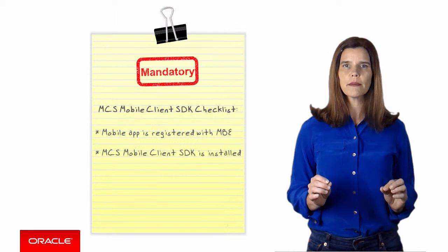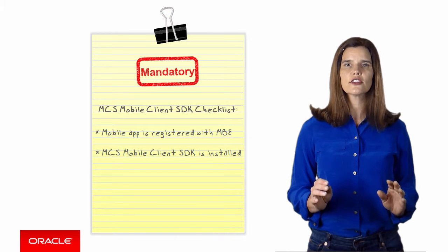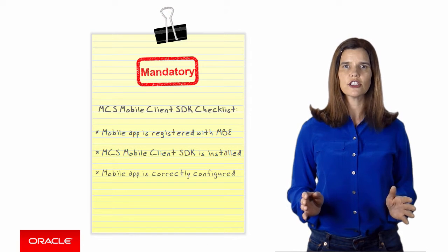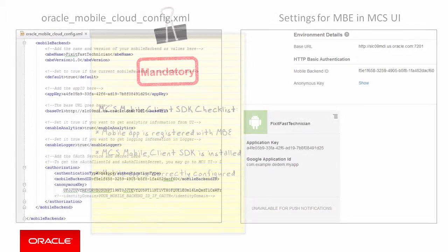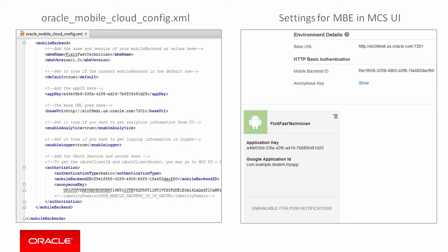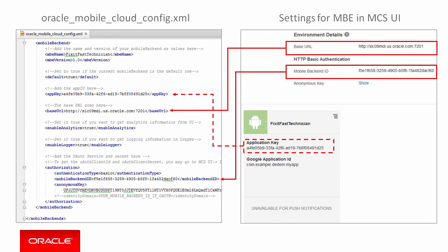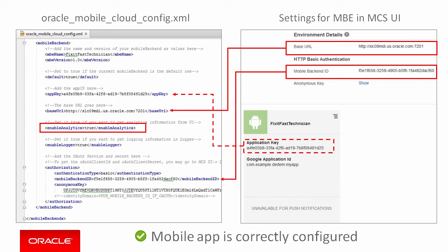Then make sure that the mobile application is correctly configured. In the Oracle Mobile Cloud Config XML file, make sure that the settings for base URL, app key, and mobile backend ID match the settings in the mobile backend. Also, make sure that analytics is enabled.